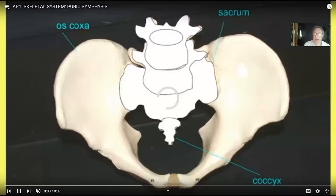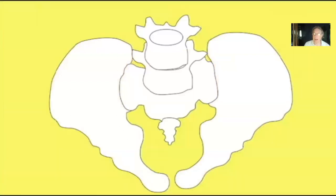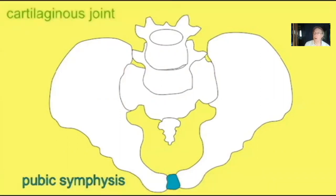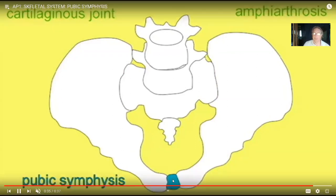It is also possible to have cartilage uniting two adjacent structures. Between the two pubic bones, we have a band of fibrocartilage. So it is a cartilaginous joint structurally, and it is an amphiarthrosis functionally. While it is not a freely movable joint, a little bit of movement is allowed here. In late pregnancy, the hormone relaxin will increase the amount of movement permitted here to make labor a little easier. So here is a cartilaginous joint because it is cartilage uniting the neighboring structures, and an amphiarthrosis because a little bit of movement is permitted.